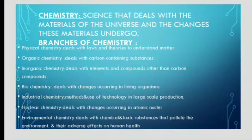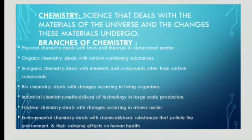The next branch is industrial chemistry. Industrial chemistry is the branch of chemistry which deals with the methods and use of technology in large-scale production. For example, medicines are produced in industries and many methods and techniques are used to produce them on a larger scale. So all the methods and techniques used to prepare medicines, and all the preparation of chemicals on a larger scale, are studied under industrial chemistry.